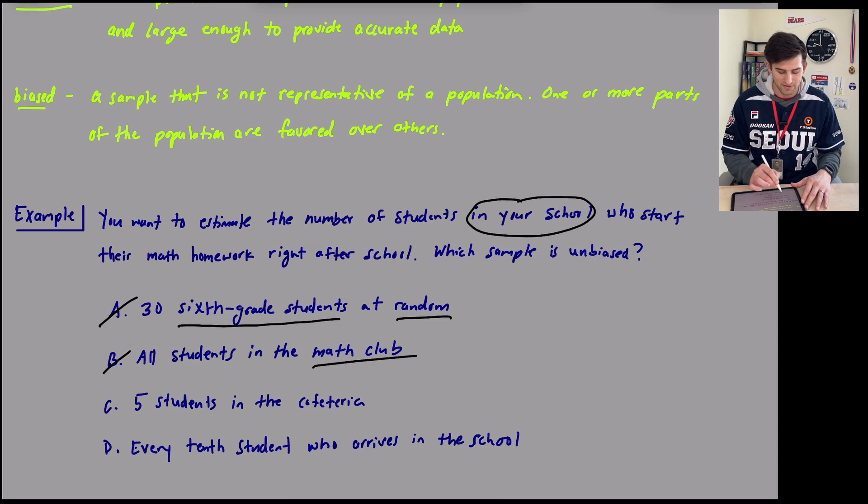Five students in the cafeteria. Well, for that one, we want our sample to be large enough to give an accurate representation of our population. If we're only asking five students, that would not be large enough.